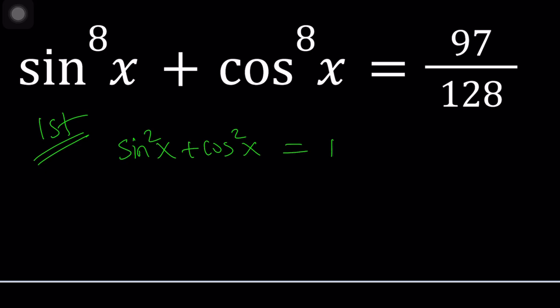Now I'm going to take this and square both sides. That's going to give me sine x to the fourth power plus cosine x to the fourth power plus two sine squared x cosine squared x equals one.